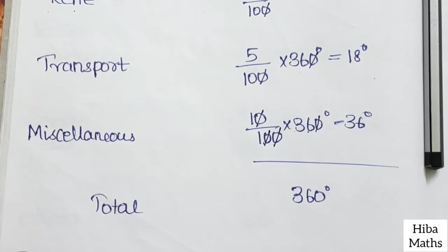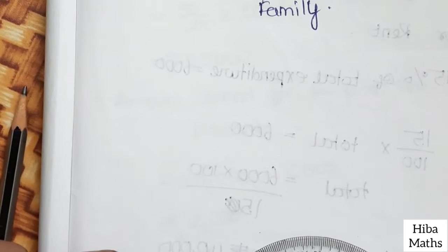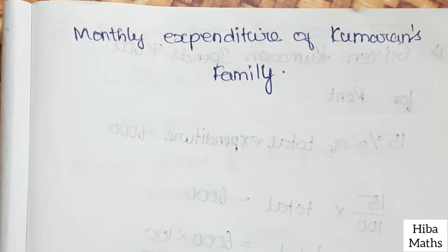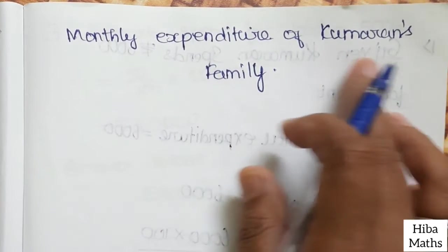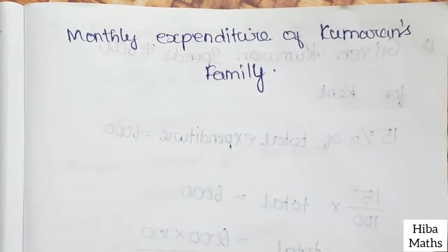Now we have a pie chart. We need a heading: Monthly Expenditure of Kumarin's Family.